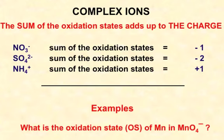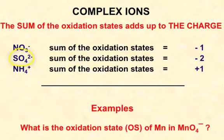You also have to take into account the overall charge of the species. For NO3 minus, the individual oxidation states must add up to an overall charge of minus one. SO4^2- has an overall charge of minus two, so whatever the individual oxidation states are, they must add together to give a total of minus two.